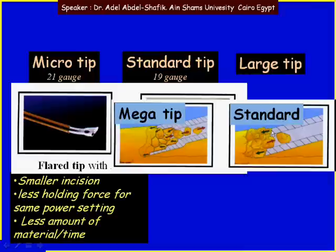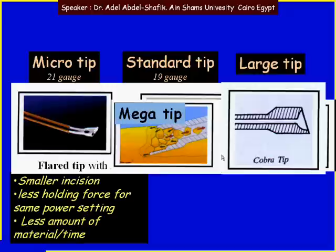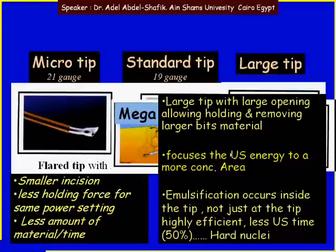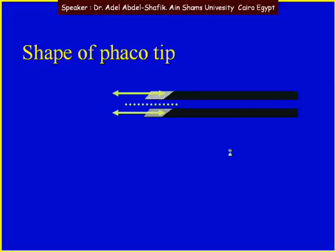We can also use a mega tip, which has a large opening at the end. The difference between the standard tip and the mega tip is that in the standard tip, the effect of fragmentation occurs opposite the metal part but not opposite the lumen. In the mega tip, we get a wide opening and a large surface area to get more effect. The same applies for the copper tip. All these large tips focus the ultrasound energy into a more concentrated area, so emulsification occurs inside the tip, not just at the tip. This gives high efficiency and uses less ultrasound time, which is especially important for hard nuclei.